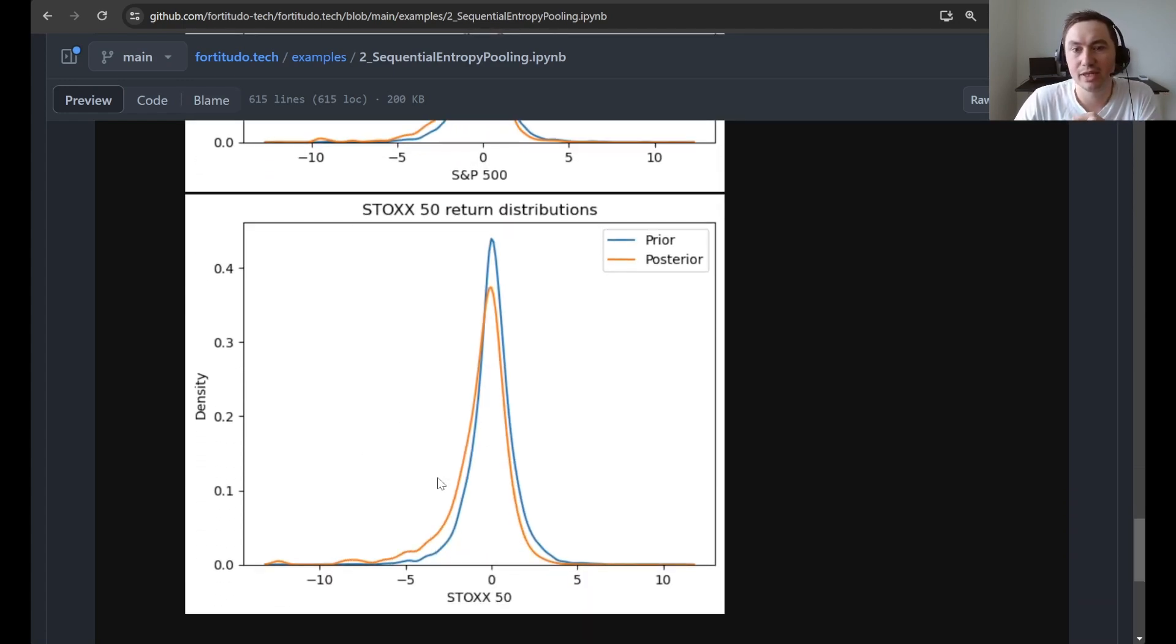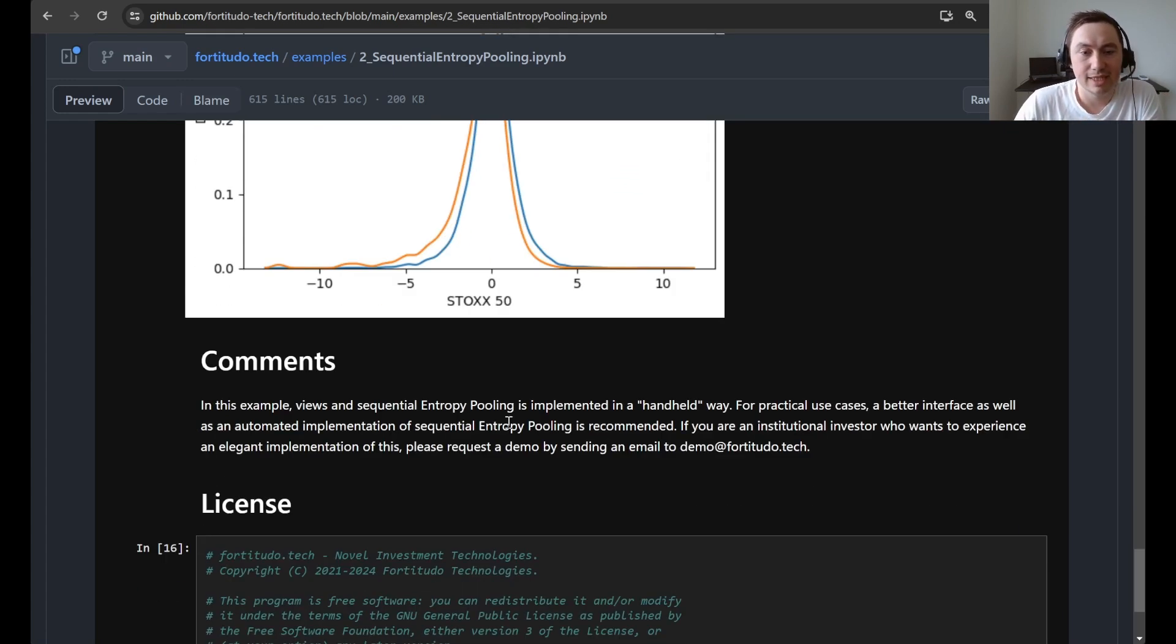And this is also what you get here for the Stoxx 50. And finally there are some comments in here that we have implemented the sequential processing and also the views in a handheld way. And so of course if you are an institutional investor managing money then you should have a much nicer interface to do all these things automatically for you so you don't make any mistakes. But this is something that is really hard to implement so it's not something that we provide for free here in the open source package.